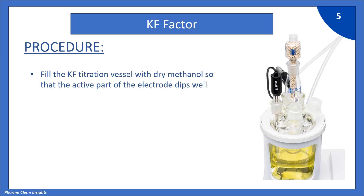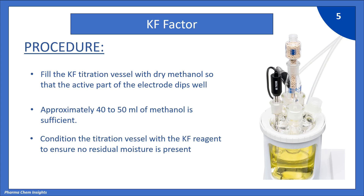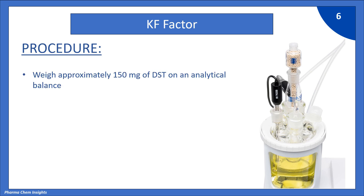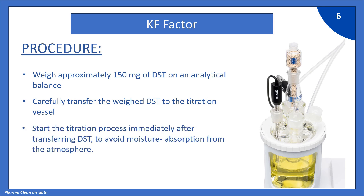Let us move on to the procedure part. Fill the KF titration vessel with dried methanol so that the active part of the electrode dips well — approximately 40 to 50 ml of methanol is sufficient. Condition the titration vessel with the KF reagent to ensure no residual moisture is present. Now, weigh approximately 150 mg of DST on an analytical balance and carefully transfer it to the titration vessel. Start the titration process immediately after transferring DST to avoid moisture absorption from the atmosphere. The titration will proceed until the end point is reached. The instrument has an inbuilt calculation so you will get the KF factor value directly, but you need to know the calculation.